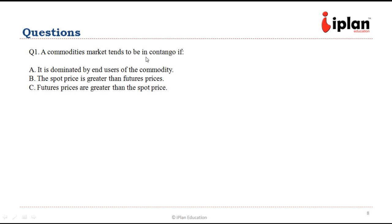The commodities market tends to be in contango. We have already seen when the spot price is less than future price, it is called contango. Option A says it is dominated by end users of commodity.